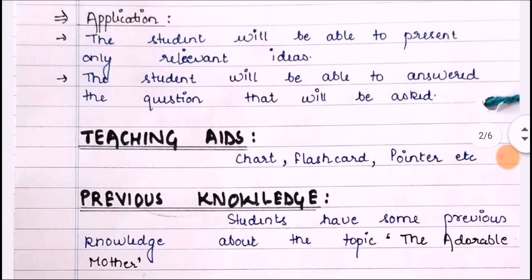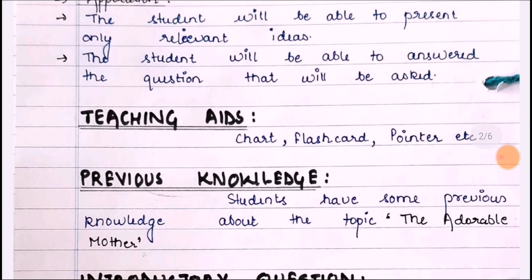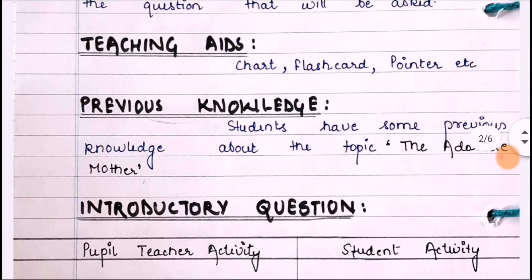The next step is teaching aids. Here we mention chart, flashcard, pointer, and other teaching materials which help in the classroom. The next step is previous knowledge — students have some previous knowledge about the topic, such as 'The Adorable Mother.'